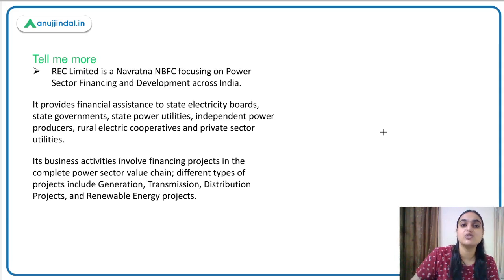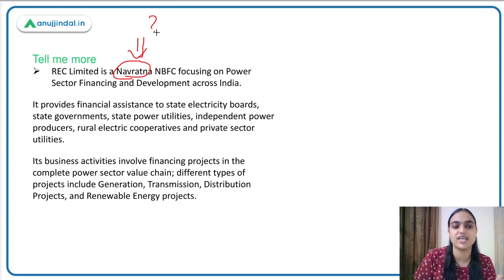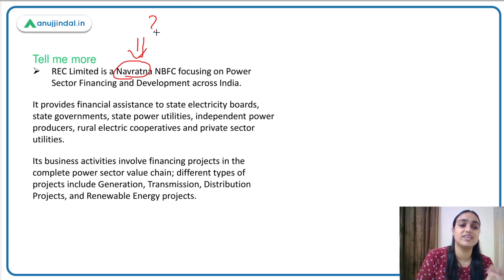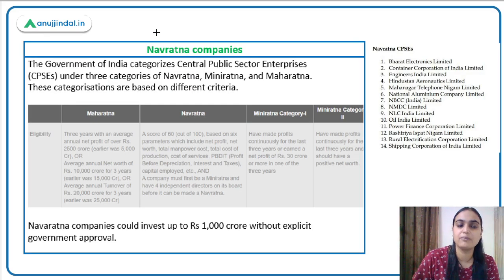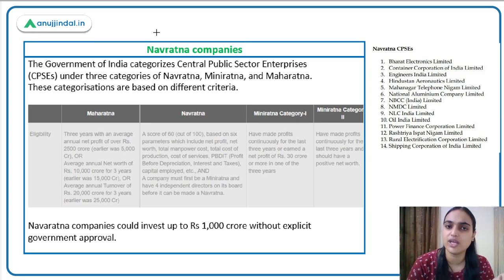REC is a Navratna NBFC — important to understand what Navratna companies are. REC provides financial assistance to state governments, state electricity boards, and independent power producers, dealing in generation, transmission, and distribution of energy projects. Central Public Sector Enterprises are classified under three categories: Navratna, Miniratna, and Maharatna companies.